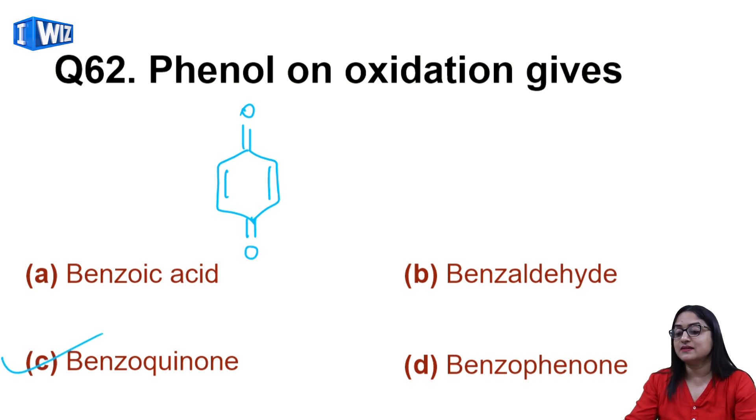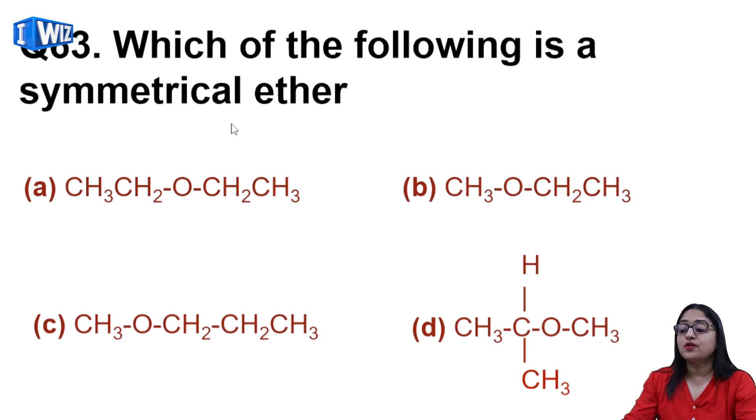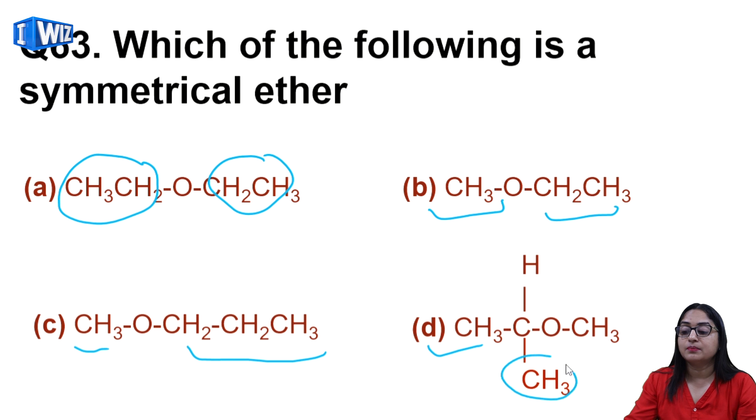Which of the following is a symmetrical ether? Symmetrical ether is one which has same groups on both sides. If you look at these four compounds, you will find the first is the correct answer.